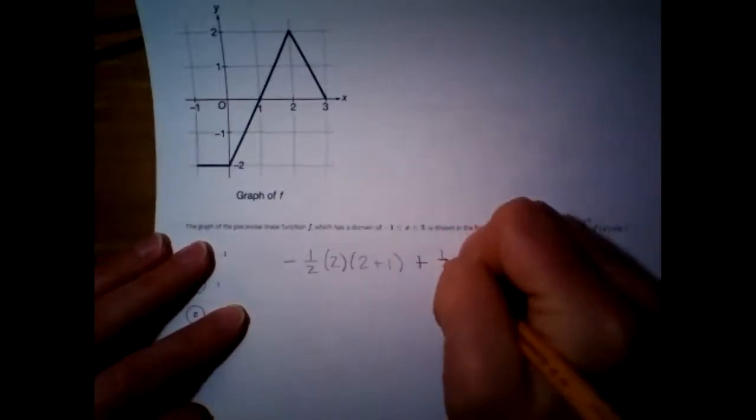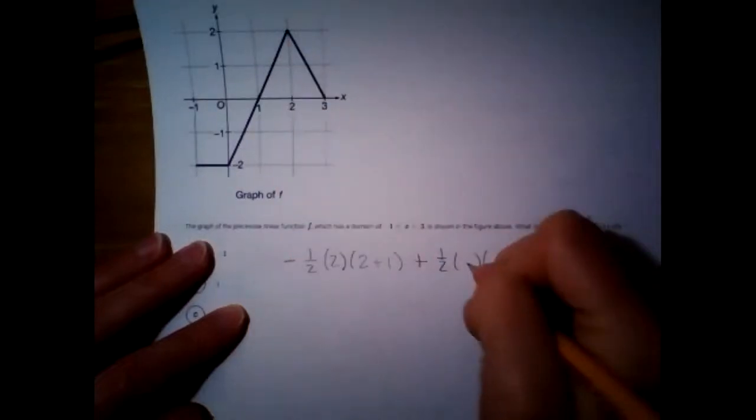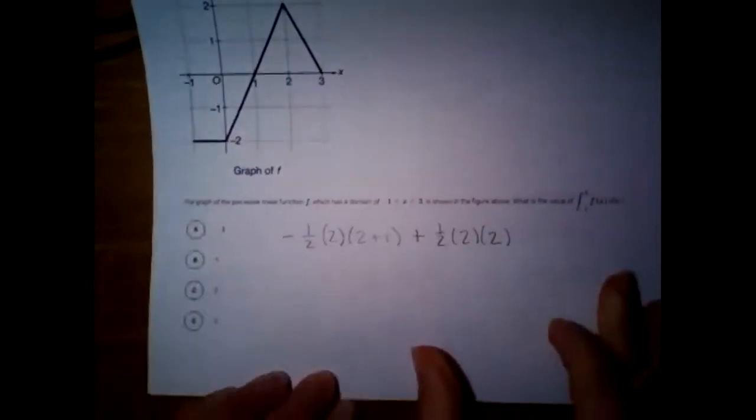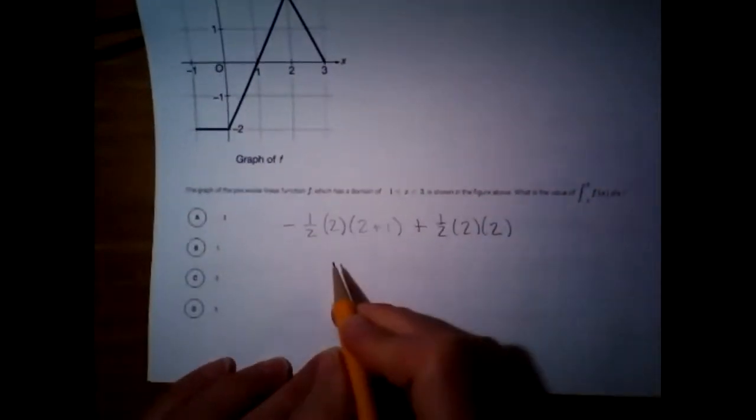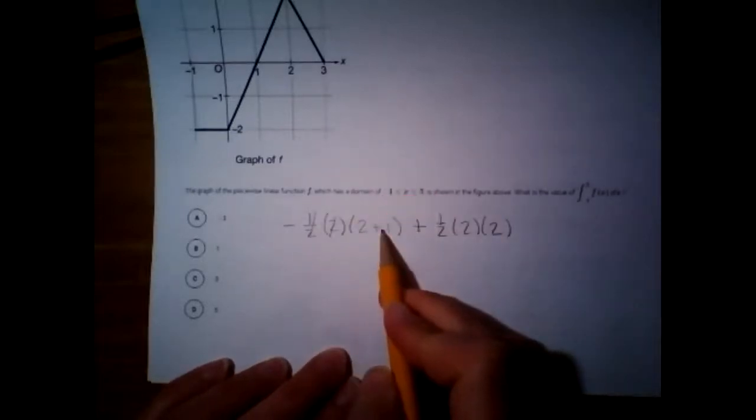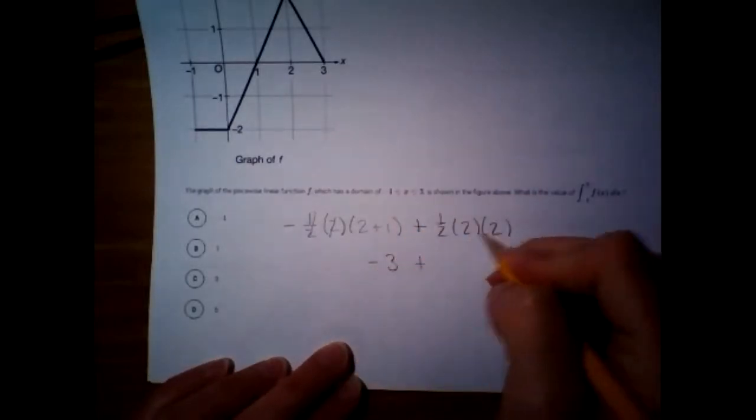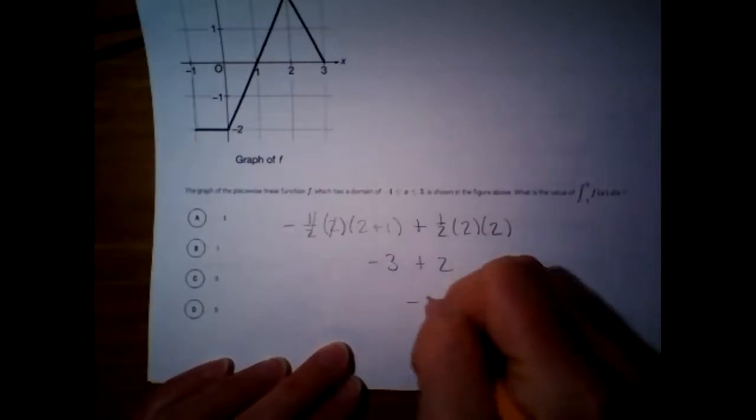Alright, then I've got a triangle. One half base times height. The base and the height are both 2. And then we just have to simplify this down. So, here, the one half and the 2 cancel, which is nice. This 2 plus 1 is 3, except it's negative. So, negative 3 plus. And then this would all be 2. So, negative 1 for that one. So, A.